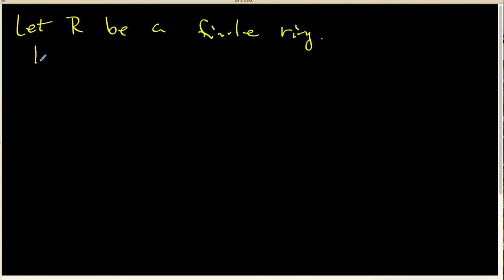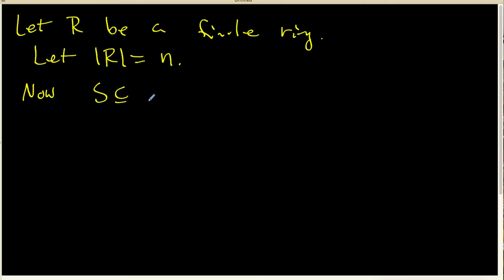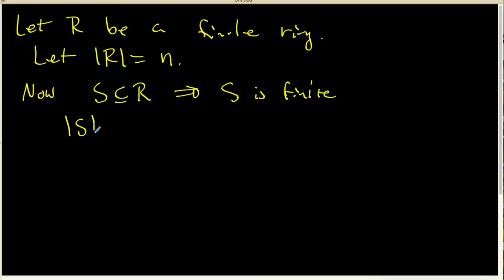We're now going to let R be a finite ring. In particular, I'm going to let the cardinality of R be equal to N. Now S is a subring of R, and hence it is a subset of R, so that implies that S is finite. So I'm going to let the cardinality of S be equal to K. And I want to look at whether there is some relationship between the cardinality of R and the cardinality of S.